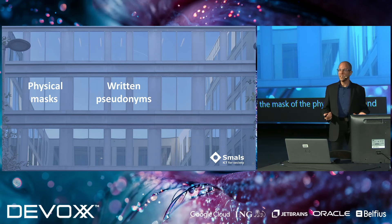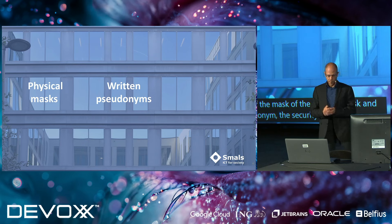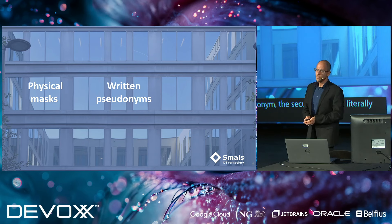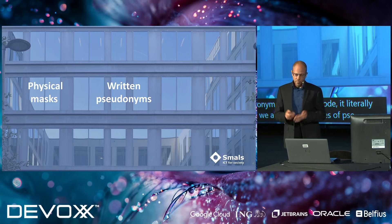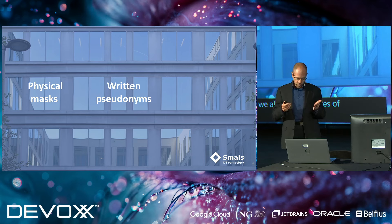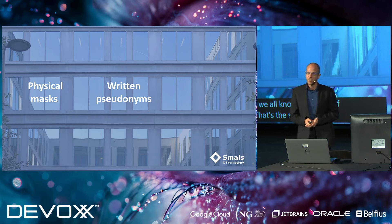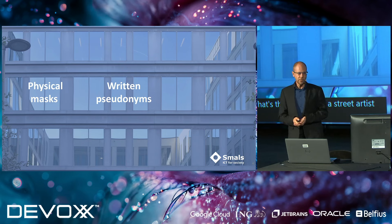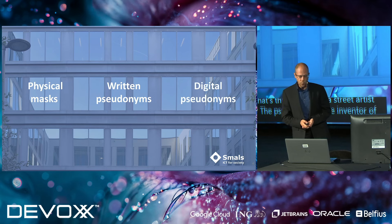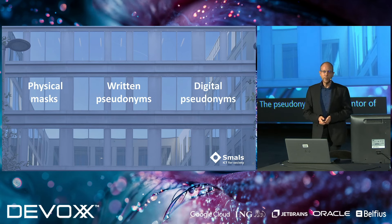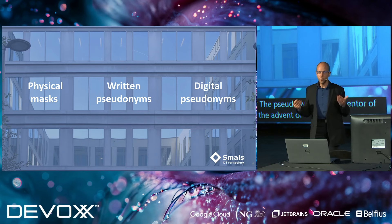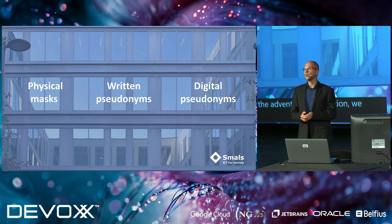Pseudonym is a Greek word. It literally means fake name. We all know examples of pseudonyms: Banksy, the pseudonym of a street artist; Satoshi Nakamoto, the pseudonym of the inventor of Bitcoin. Later, with the advent of digitalization, we saw a more complicated version of the written pseudonym — the digital pseudonym — which offers possibilities that in the past were not possible.